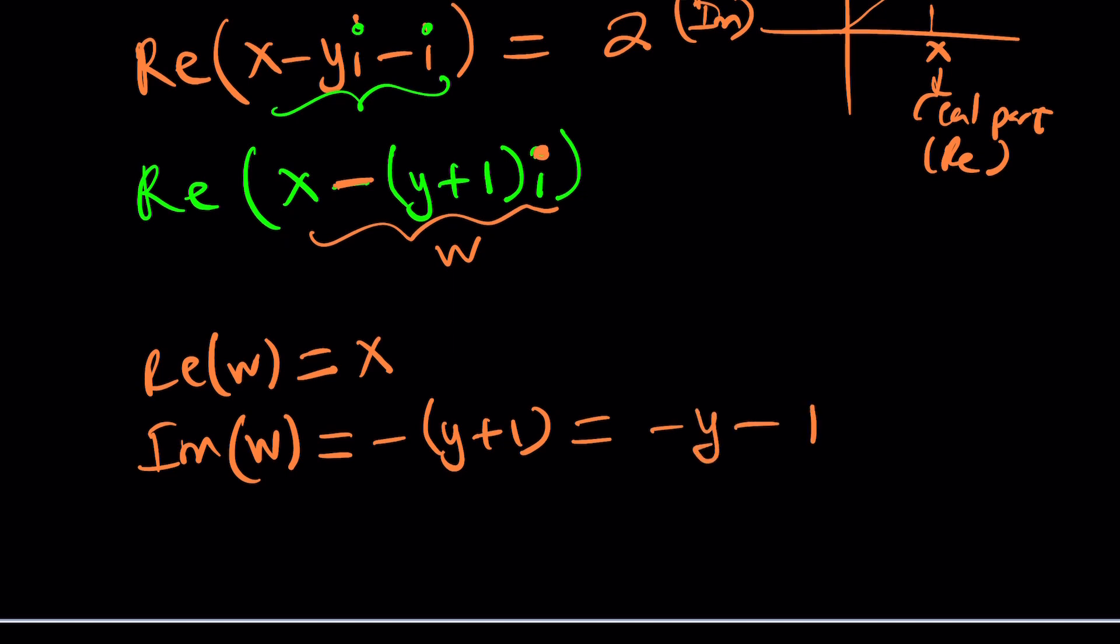Now, what does this mean, though? Why do we need the imaginary part? We don't. But why did you write it? Just wanted to show you how to find it real quick. What we need to focus on is the real part, because that's what the equation says. And it says that this is equal to 2. But we already know that the real part of this number is x. So this means x equals 2.